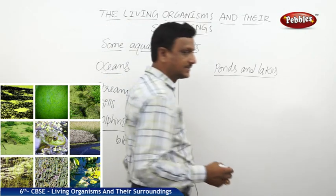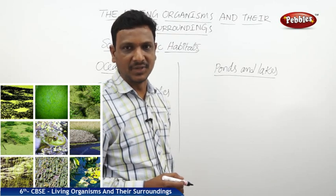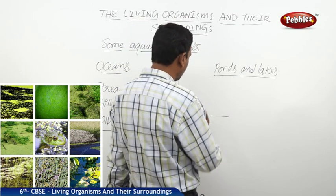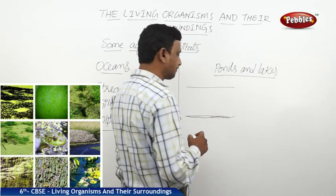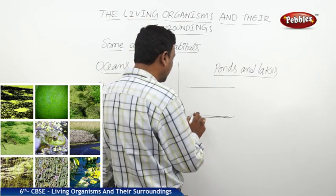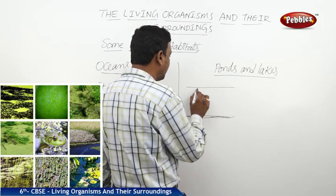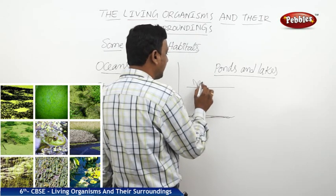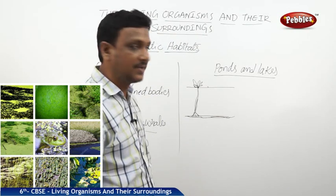Now let us see the case of ponds and lakes. In ponds and lakes, we observe mostly different kinds of plants. The surface of the pond is above, and the bottom is where there is mud. We can see different types of plants in ponds. Some plants have their roots fixed in the soil under the water, and from there the stems are very hollow and thin, with leaves and flowers outside above the surface. These kinds of plants are observed in ponds.